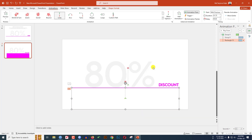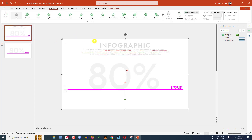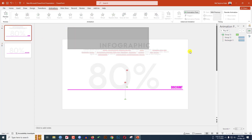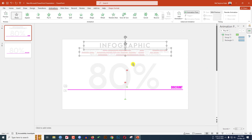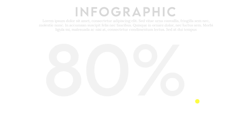Now I have to send this one to back. Right-click and Send to Back. Now I have to add some text, so let me go to my first slide and copy this text — you can write it very easily. Let me paste it over here.